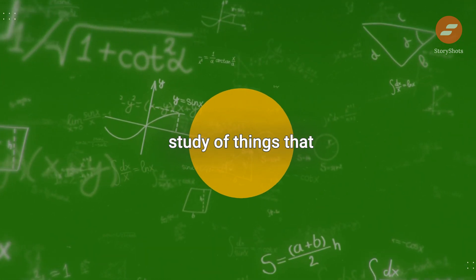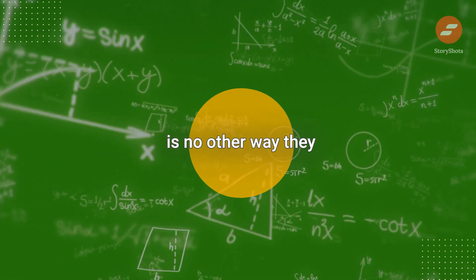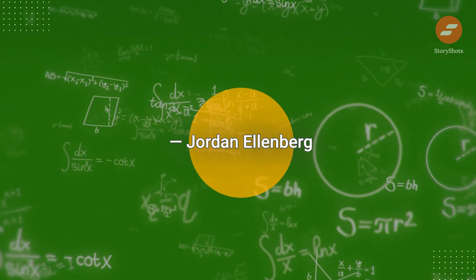Mathematics is the study of things that come out a certain way because there is no other way they could possibly be. Jordan Ellenberg.